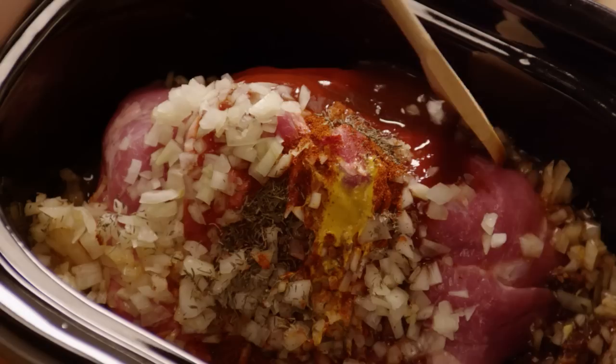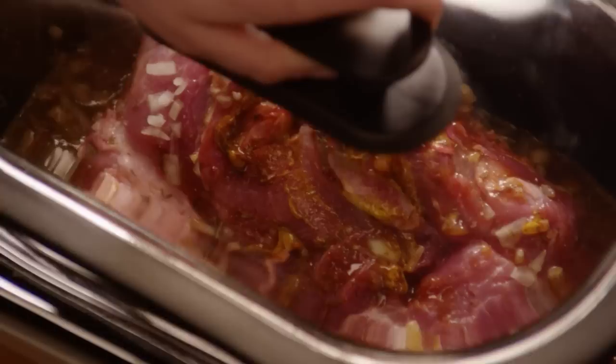Stir the ingredients to mix everything together well. Cover the slow cooker and cook the pork on high for five to six hours, or up to eight hours on low, until the roast shreds easily with a fork.